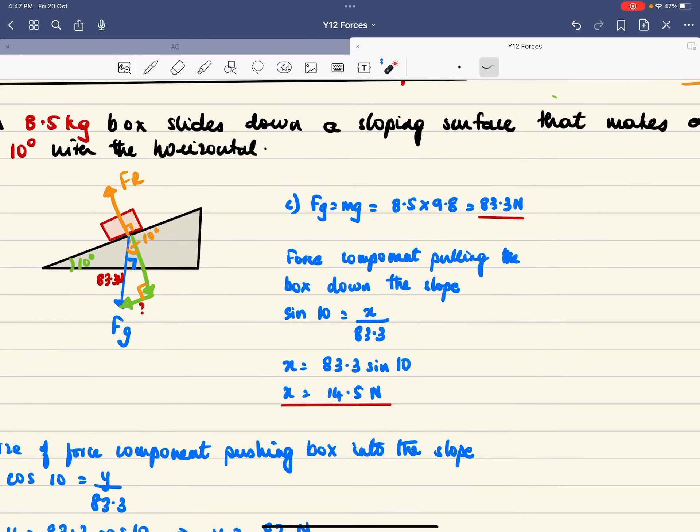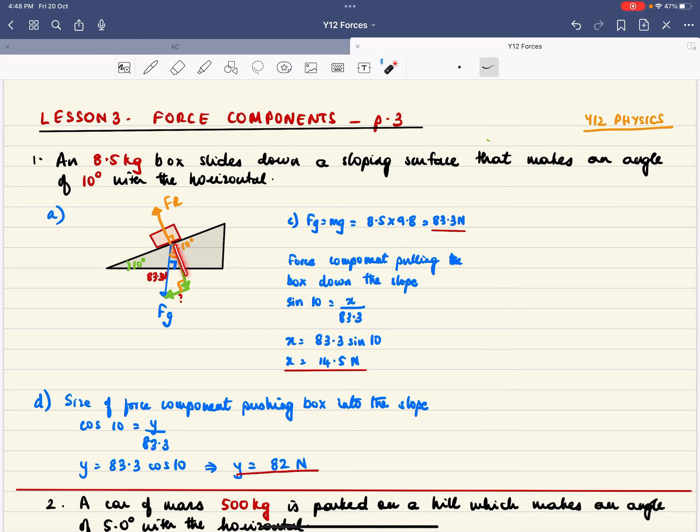Now if I need to find the size of the other component, what is that doing? That is kind of pushing the box into the slope. This component is trying to bring the box down the slope. So in order to find this, that's my cos theta and I use cos theta and I get this. So that's how you solve these problems.